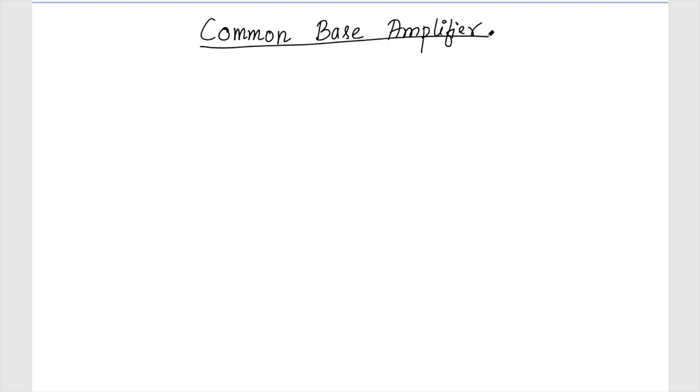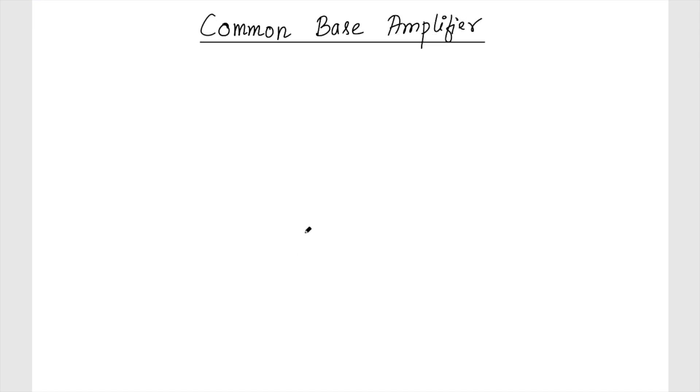Till now we have discussed a common emitter and the common collector amplifier. In this lecture we will discuss a common base amplifier of BJT. In the common base amplifier we will be grounding the base, or the base will be AC-wise ground. We will apply the signal at the emitter and collect the signal from the collector.